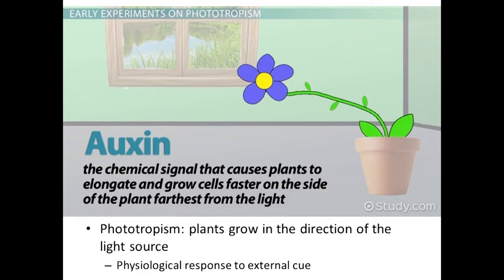Another type of response is phototropism. In phototropism, plants will grow towards the direction of light. You may have seen this if you have a house plant that grows towards a window. Plants are triggered to grow towards light because they utilize light for photosynthesis in order to make their food. In some plants, the chemical auxin is used to stimulate growth of cells on one side of the plant, causing that side to elongate and allowing the plant to move in the direction of light.